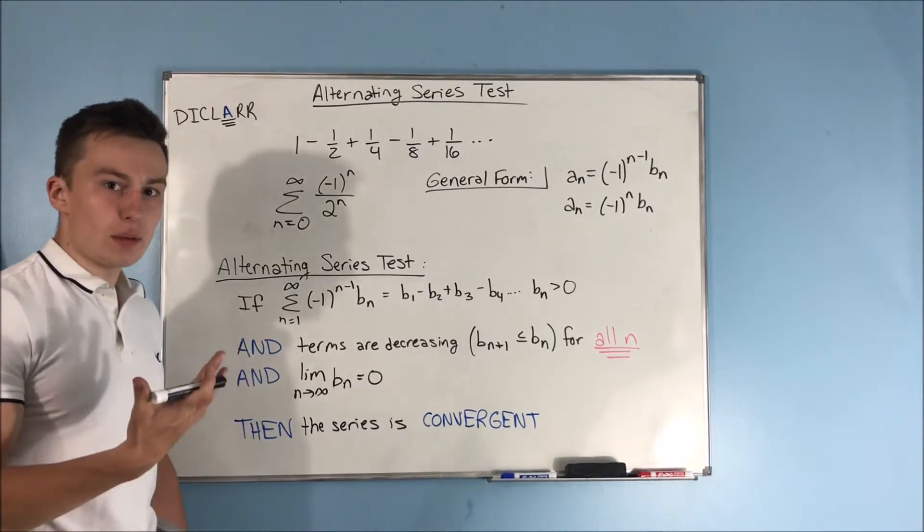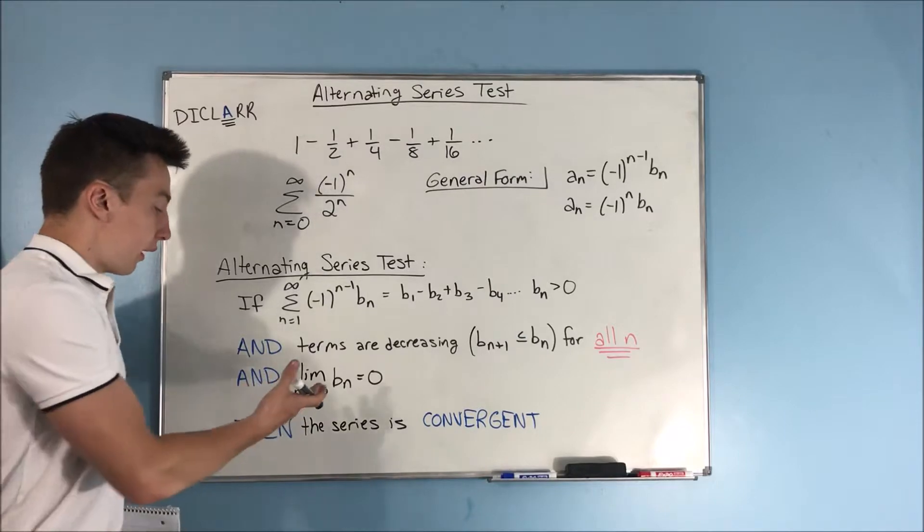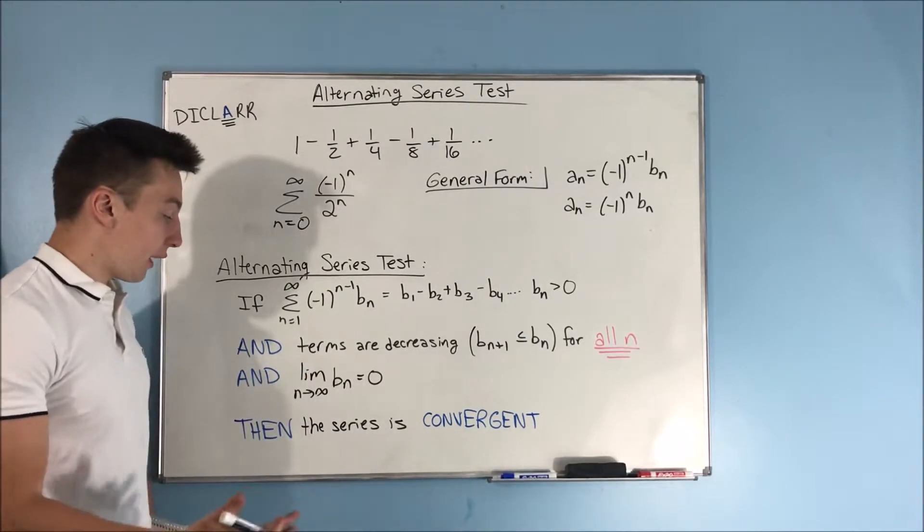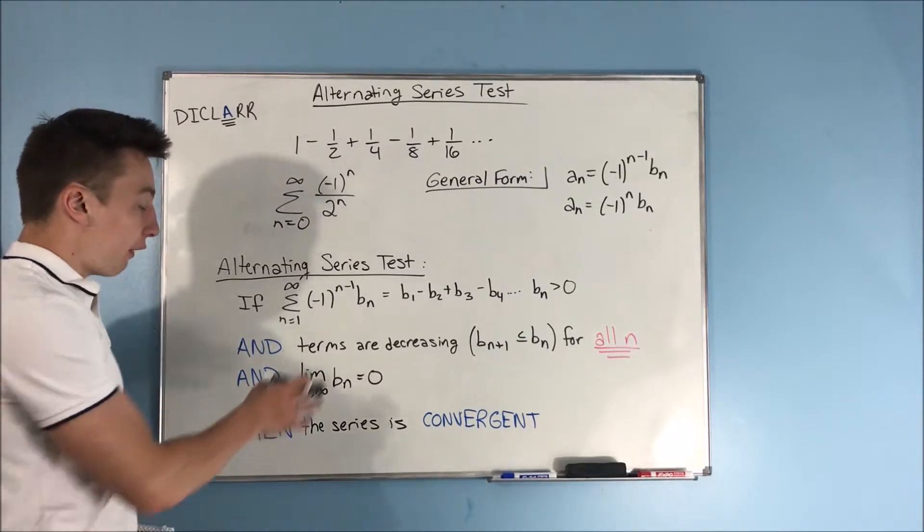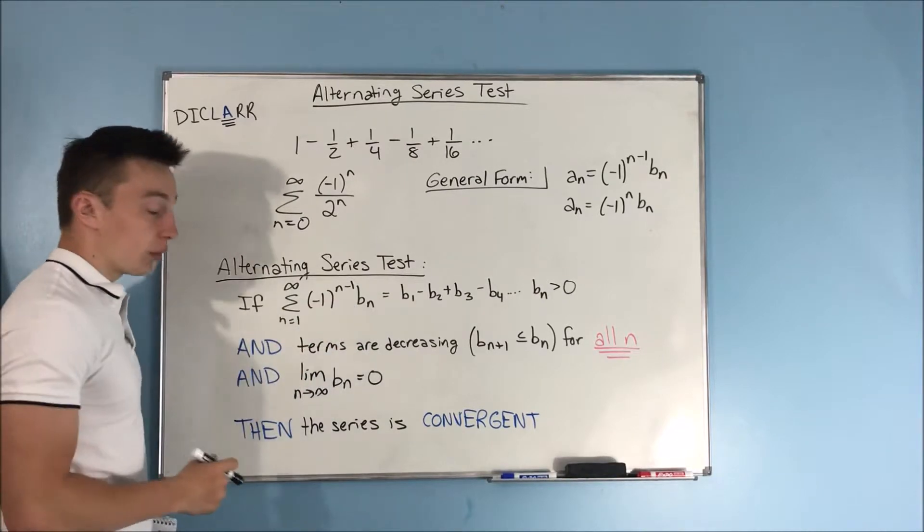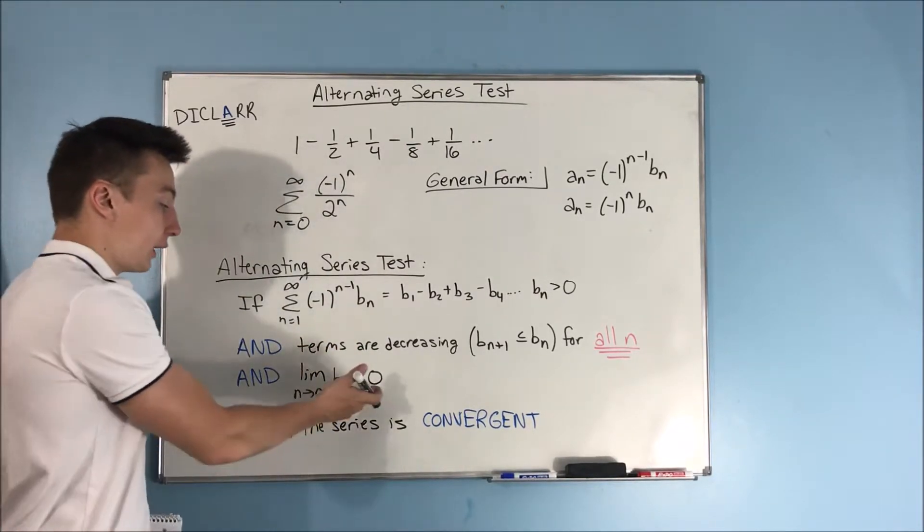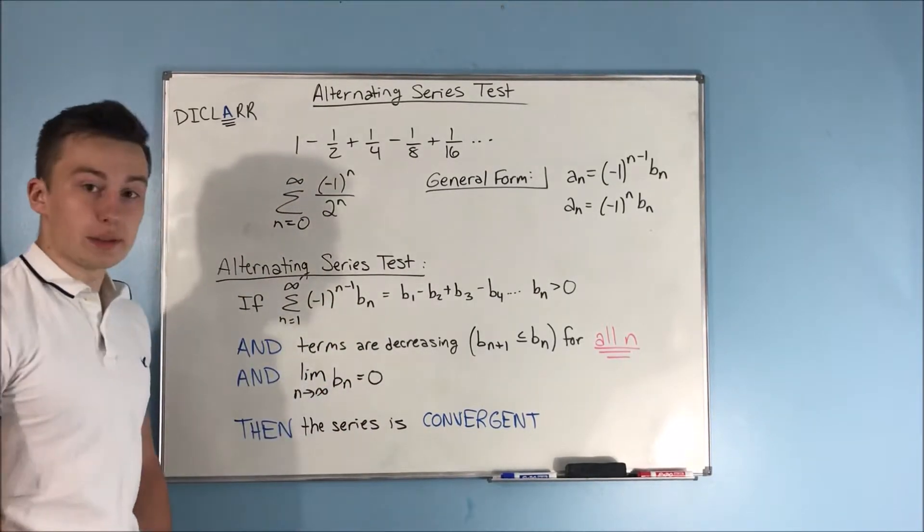So, you just need to figure out if it's decreasing. We've done that with the integral test. That was one of the things that we had to do. And you need to figure out if that limit, as that approaches infinity, of everything in that series but that negative 1 to the n minus 1. If that equals 0, then great. Your series is convergent.